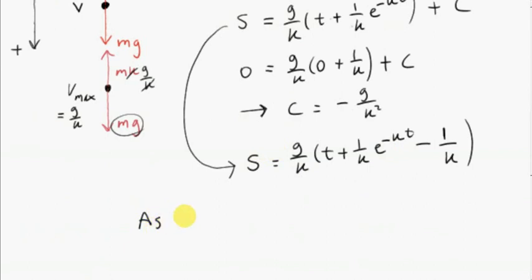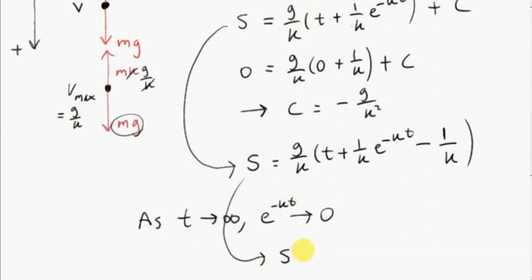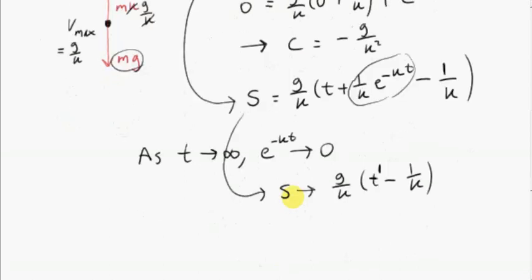As t gets very large, e to the minus kt approaches zero, so s approaches a linear function of time — g over k times t plus a constant. When distance is a linear function of time, speed is constant. Differentiating with respect to time: ds/dt equals v approaches g over k. The constant term g over k times minus 1 over k just goes to zero. This confirms the terminal velocity g over k found in the first part — everything is consistent.